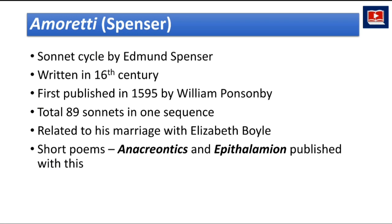The next one is 'Amoretti,' written by Edmund Spenser. It is a widely famous sonnet cycle written in the 16th century and first published in 1595 by William Ponsonby. It has a total of 89 sonnets in one sequence and was related to Spenser's marriage with Elizabeth Boyle. Two short poems, 'Anacreontics' and 'Epithalamion,' were published along with this volume.